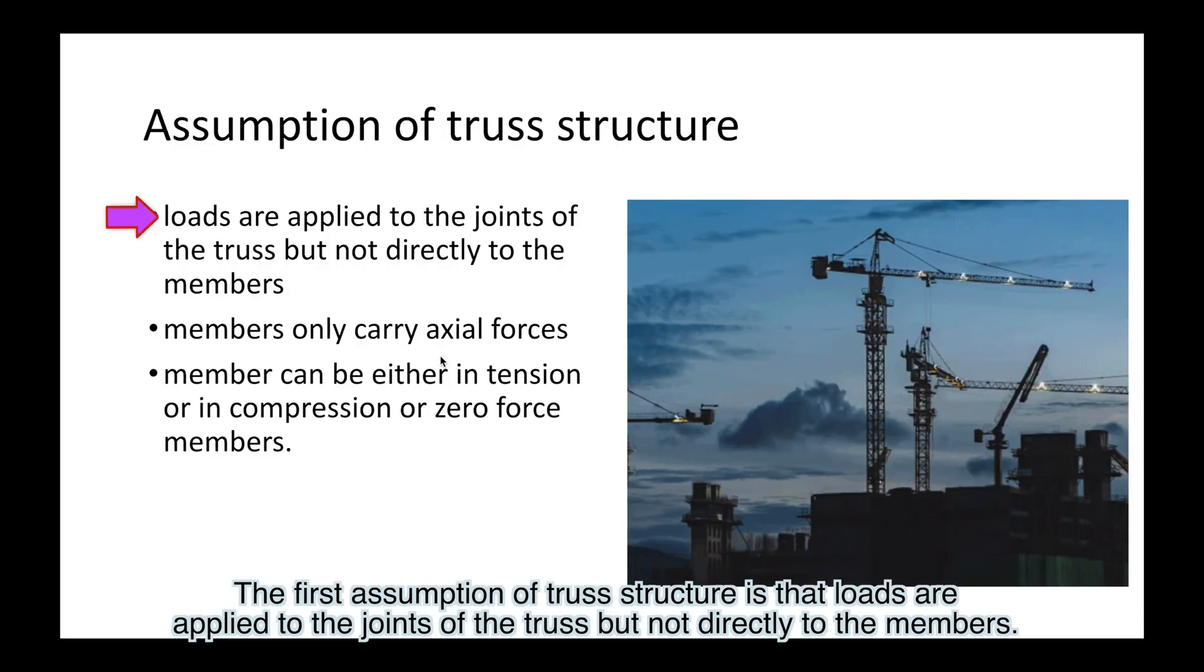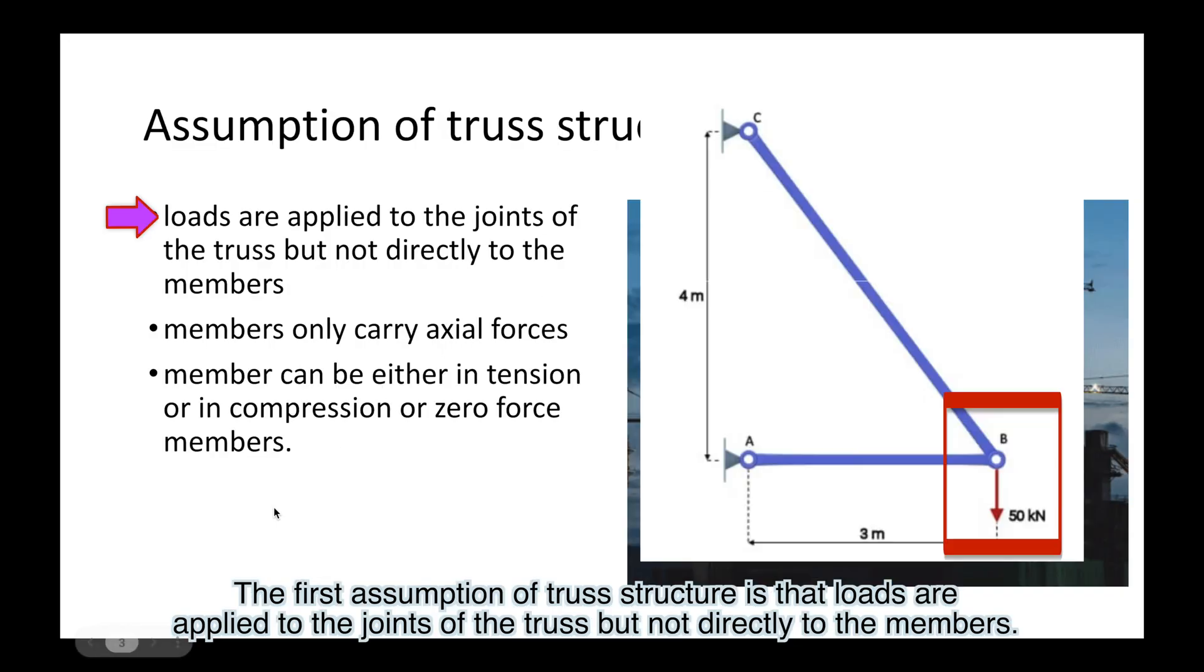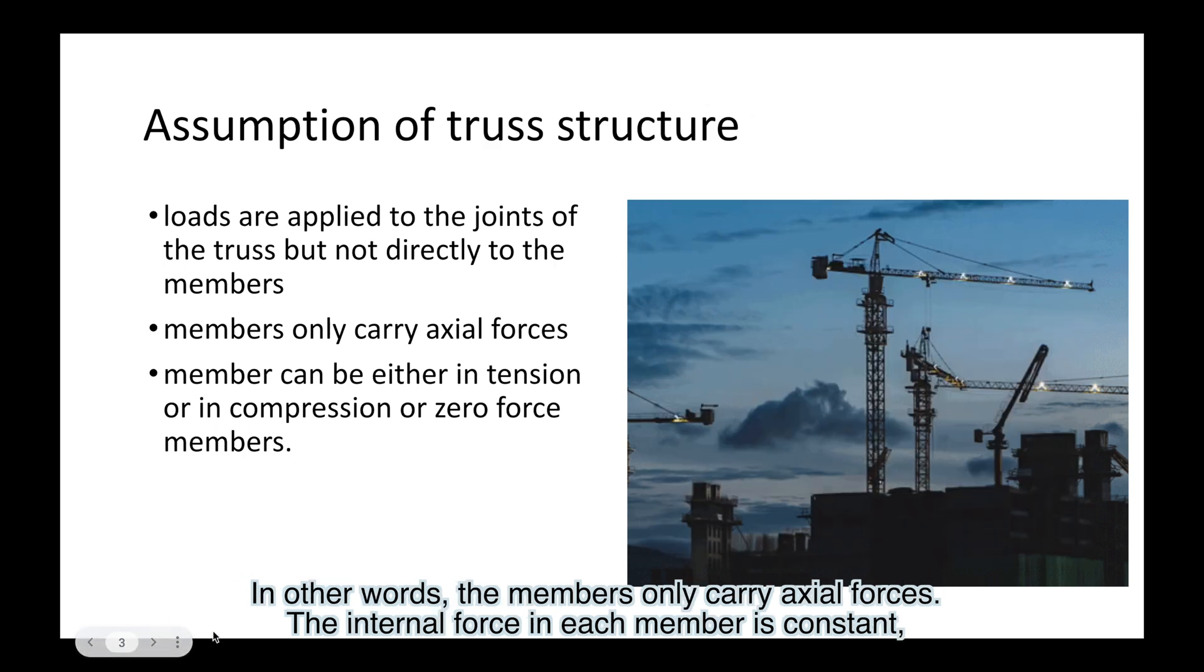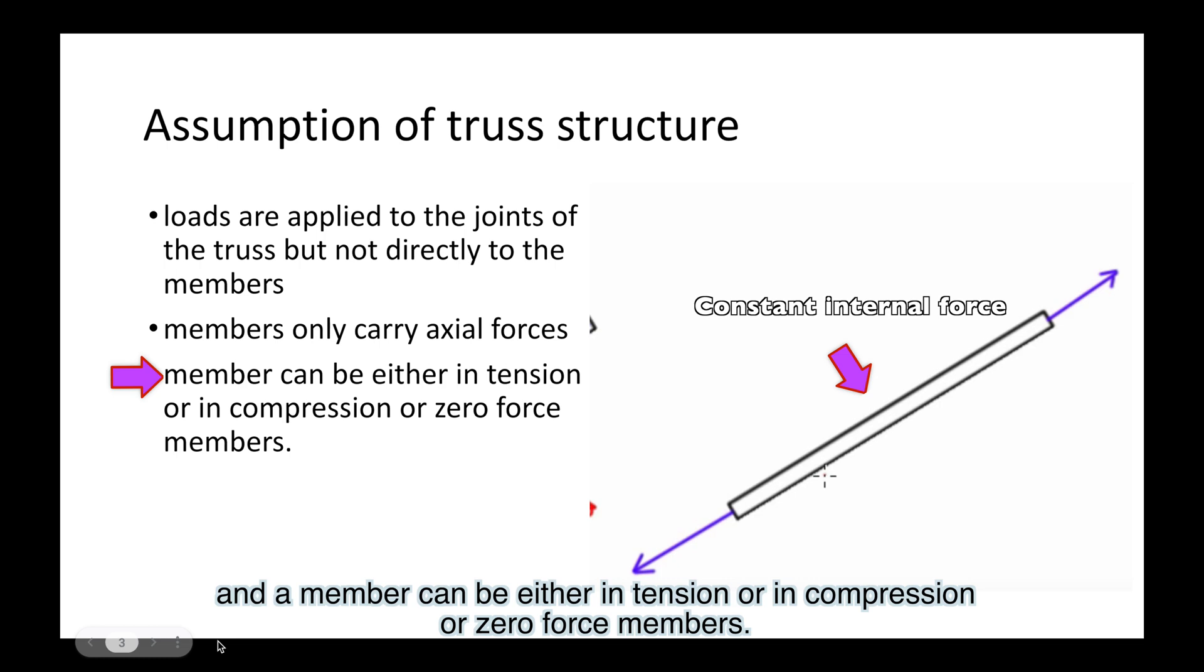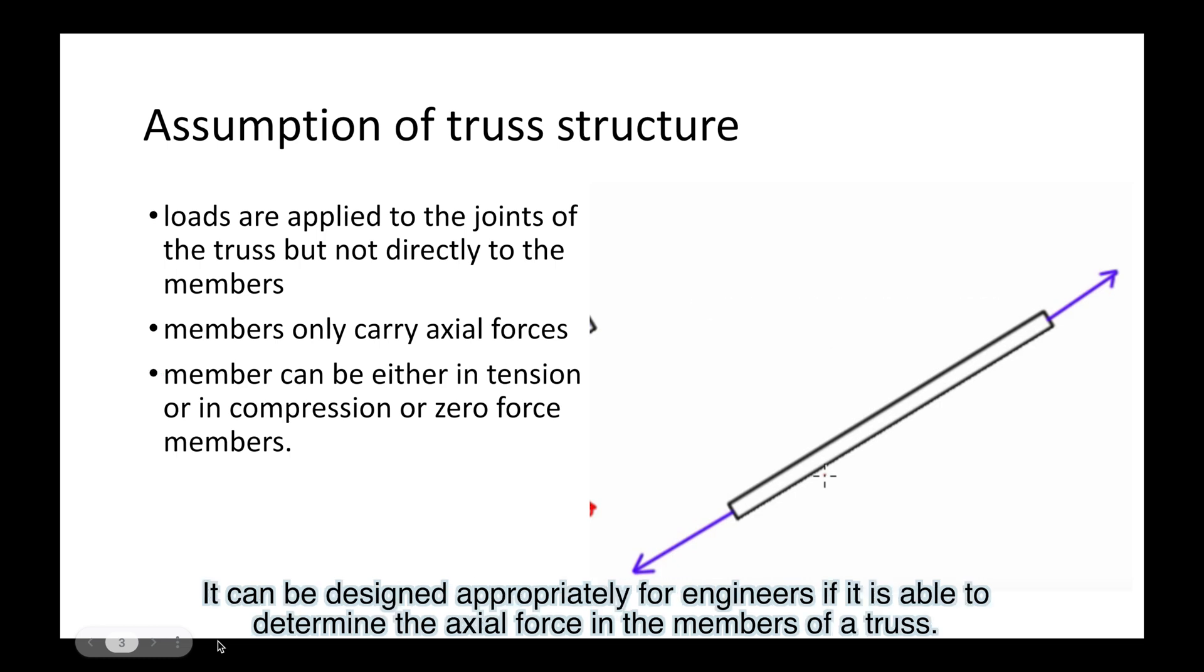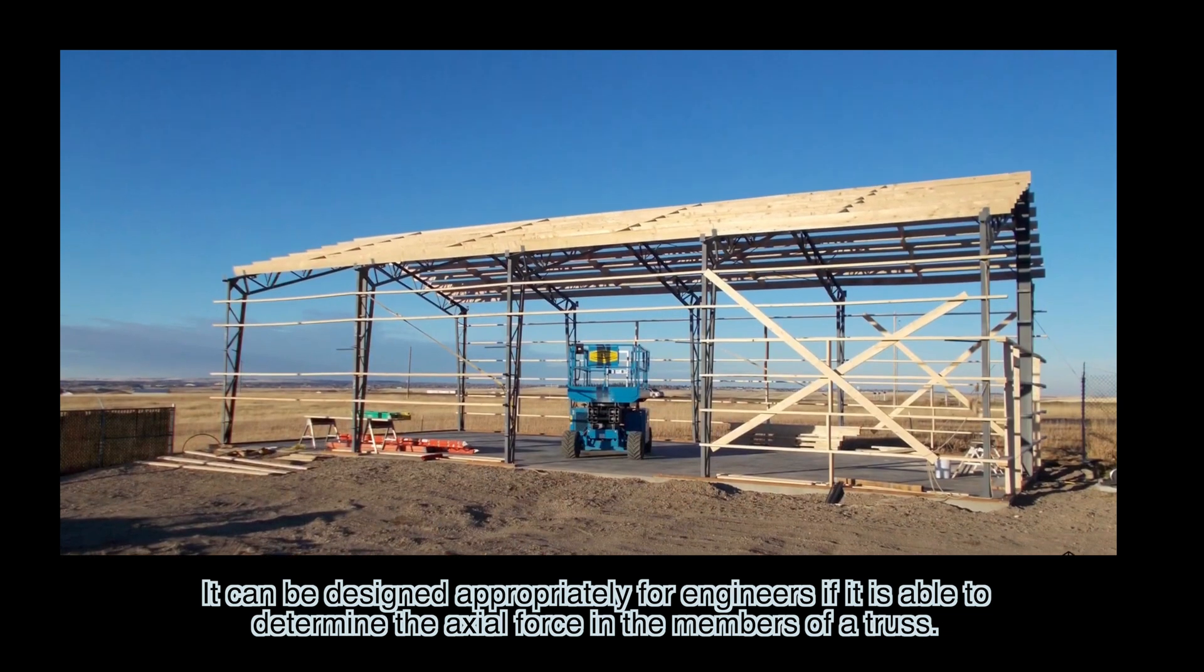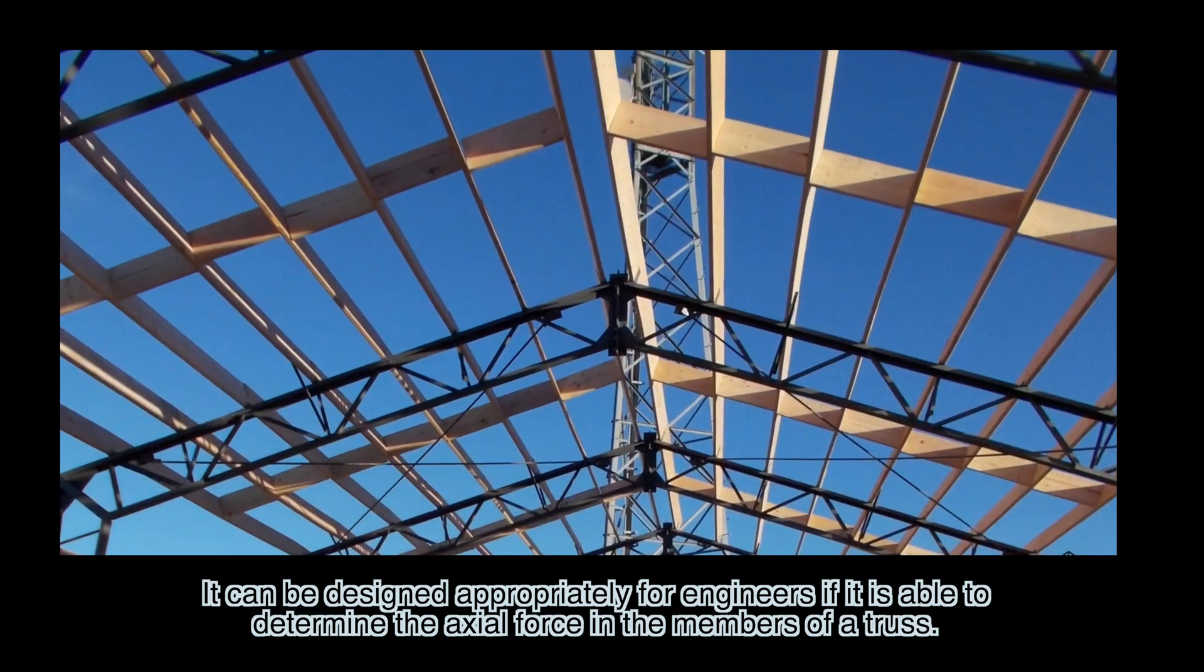The first assumption of truss structure is that loads are applied to the joints of the truss, but not directly to the members. In other words, the members only carry axial forces. The internal force in each member is constant, and a member can be either in tension, compression, or zero force members. Engineers can design appropriately if able to determine the axial force in the members of a truss.